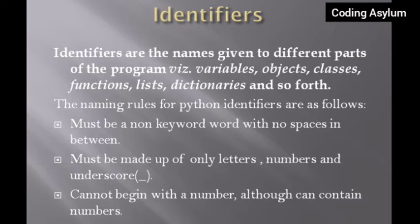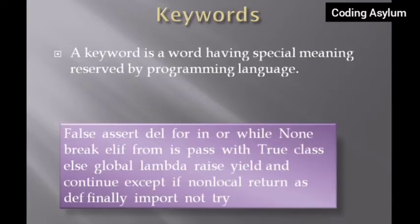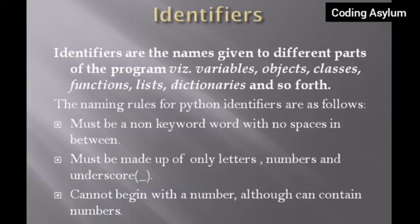Let's look at the naming rules for Python identifiers. There are three basic rules. The first rule is that an identifier must be a non-keyword with no spaces in between — an identifier should not be a keyword, such as any of the reserved words shown on screen. An identifier must also be a single word; it should not have a space.